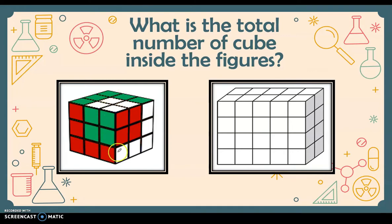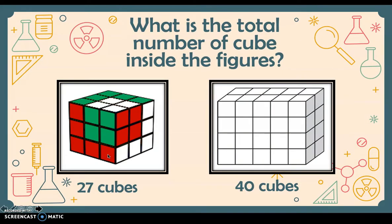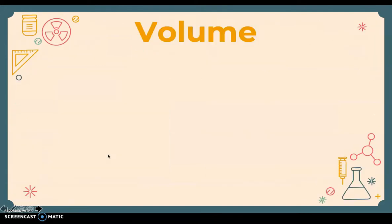We have three rows, therefore nine times three gives us 27 cubes. And in this prism we have one, two, three, four, five, six, seven, eight, nine, ten — and then there are four rows with 10 cubes in each row, so we have 10 times 4, giving us 40 cubes.